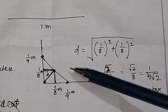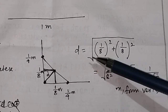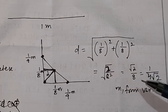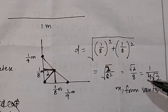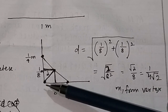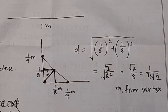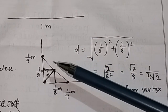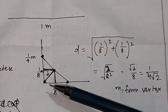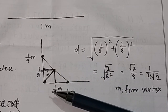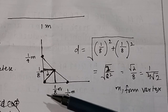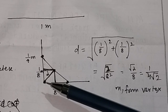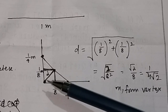Applying the Pythagorean theorem, d equals the square root of (1/8)² plus (1/8)², which gives d equal to 1/(4√2) meter from the vertex. Therefore, the center of mass of a uniform rod of length 1 meter, bent at 90 degrees to form two arms of equal length, lies on the bisector of the angle at 1/(4√2) meter from the vertex.